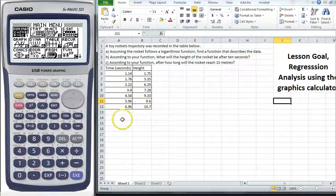Now if you're given any kind of table like this and then you're asked, assuming the rocket follows a logarithmic function, find a function that describes the data. This is a regression analysis question, so we can put all of this into our calculator and find a function, in this case a logarithmic function, that describes the data.